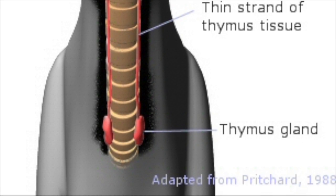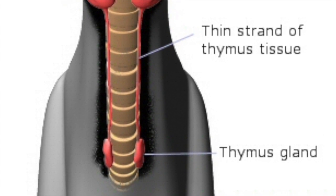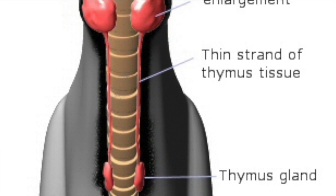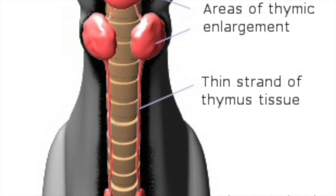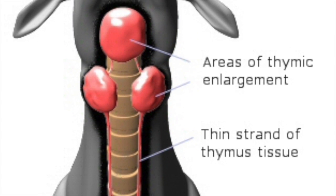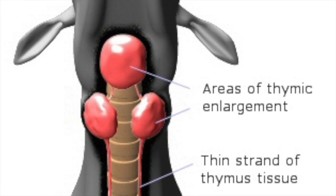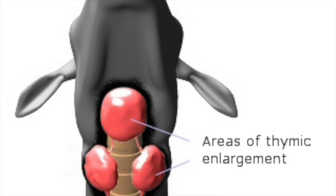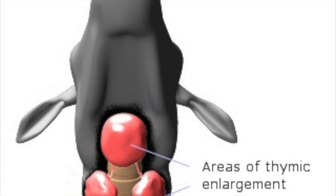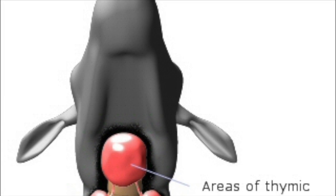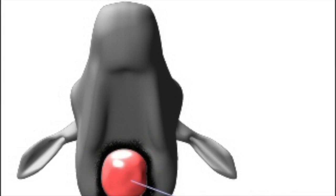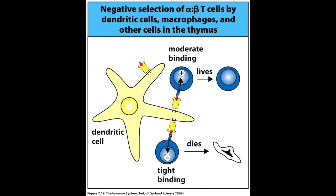The thymus is the boot camp for potential T cells. Lymphocytes are sent from the bone marrow, and in the thymus these potential T cells are presented with antigen and self cells. Those that respond poorly are destroyed, and those that respond well go on to be T cells.